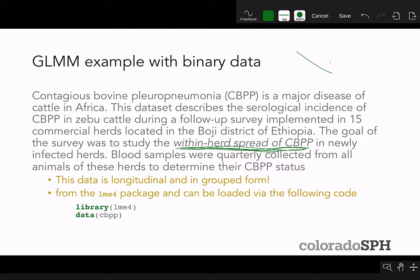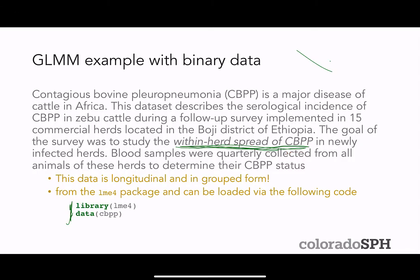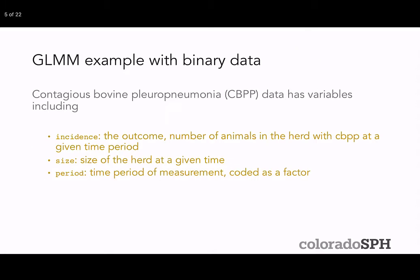The data is contained within the LME4 package and can be loaded with two lines of code. The data is longitudinal — there are clusters of observations within each herd, so herd is the level of the repeated measures. It's also in grouped form, similar to the group-level format we discussed in logistic regression.